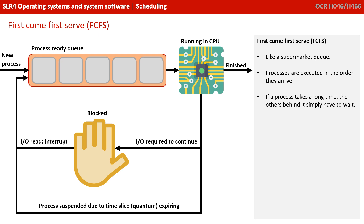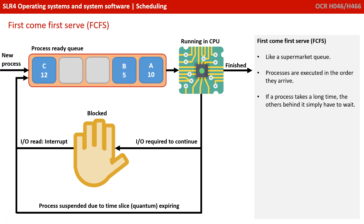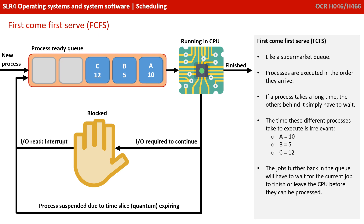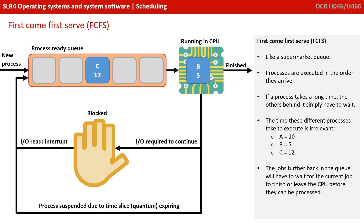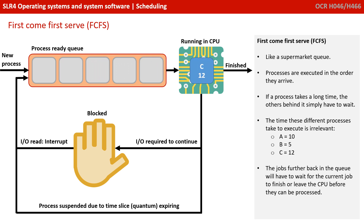The first algorithm to consider is first come first serve. You can think of this just like a supermarket queue — processes are executed strictly in the order they arrive. If a process takes a long time, the others behind it simply have to wait their turn. The time these different processes take to execute is irrelevant. The fact that A is 10, B is 5, and C is 12 doesn't matter; the jobs further back simply have to wait for the current job to finish or leave the CPU before they're allowed to be processed themselves.